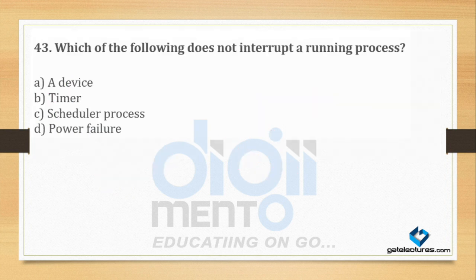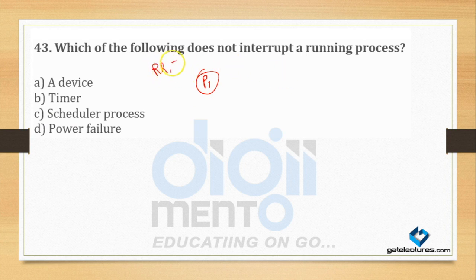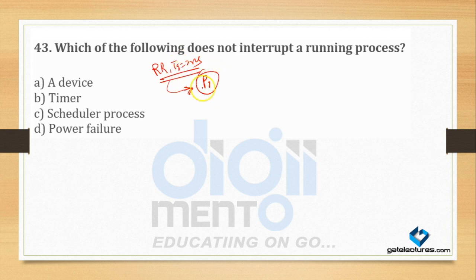Which of the following does NOT interrupt a running process? If we use a round robin algorithm with time quantum 2 nanoseconds — when the time quantum expires, a timer interrupt occurs. A device can also interrupt a running process. A power failure can interrupt it too. But a scheduled process does not interrupt a running process — a scheduler always keeps running; its job is to schedule processes, not interrupt them.